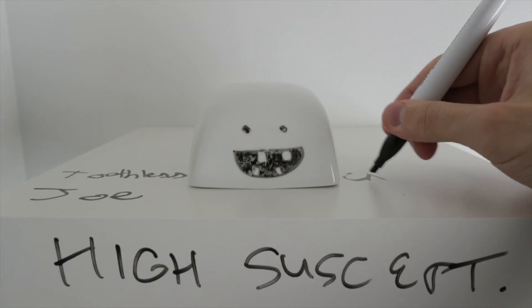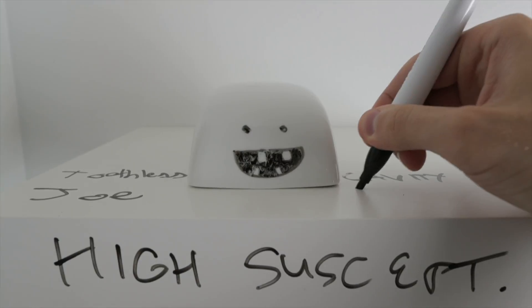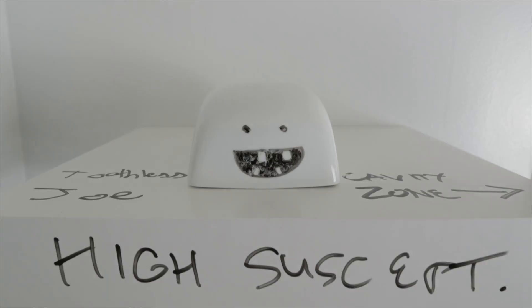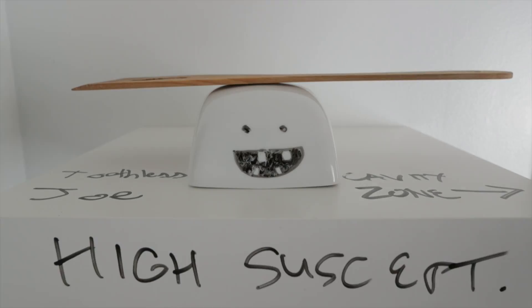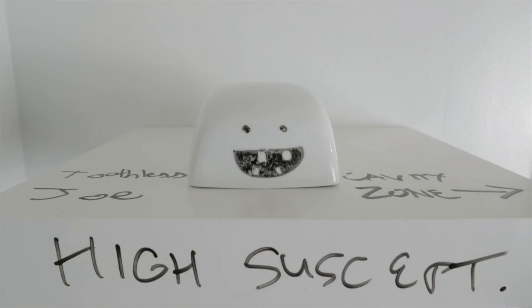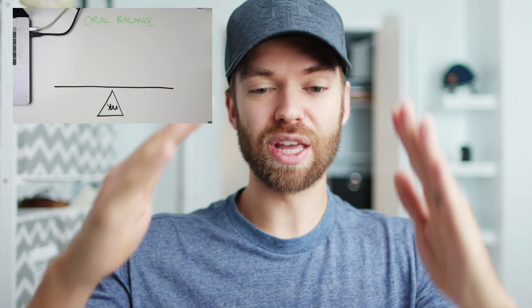Toothless Joe, on the other hand, has a much more significant problem — any single risk factor that he adds to his situation and he's already developing cavities. So if you remember back to our little teeter-totter diagram, you'll remember that you were the fulcrum underneath. No two fulcrums are made the same, and people are going to go out of balance at different rates.